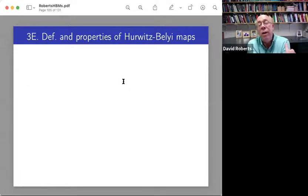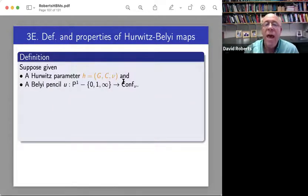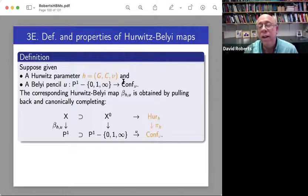All right. Now, finally, let me go a little bit more slowly. What is a Hurwitz-Belyi map? The basic idea is to take the magic of Hurwitz maps and move them over to Belyi maps. So suppose given a Hurwitz parameter and a Belyi pencil.